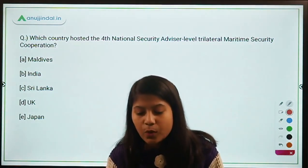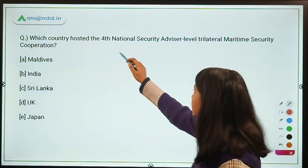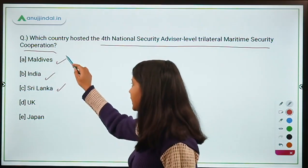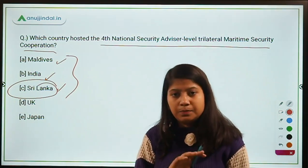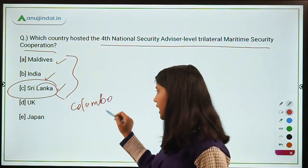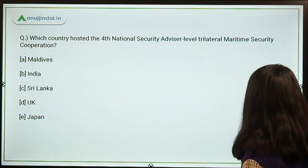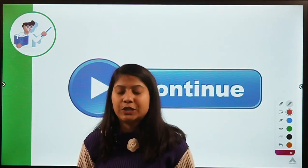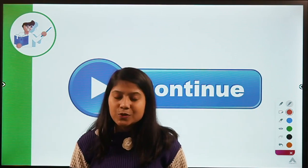Which country hosted the fourth National Security Advisor-level trilateral maritime security cooperation meeting? This meeting was held among Maldives, India, and Sri Lanka. Sri Lanka hosted this fourth edition of the NSA meeting in Colombo. India's National Security Advisor Ajit Doval participated. This concludes Part 1 of the November Spotlight revision session — Part 2 will be uploaded soon. Thank you for watching.